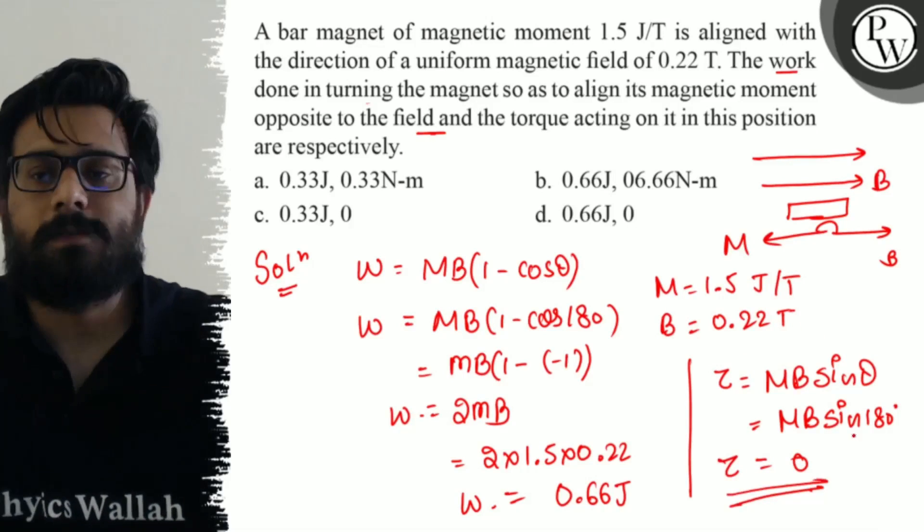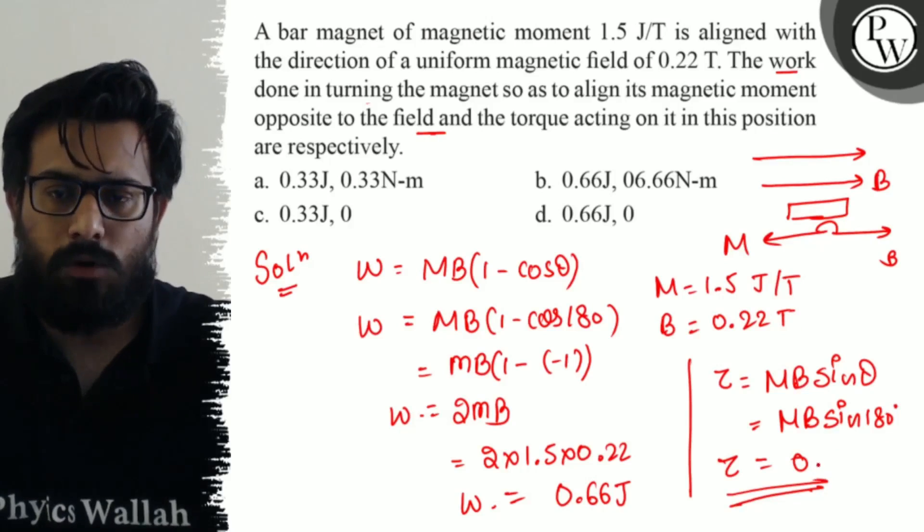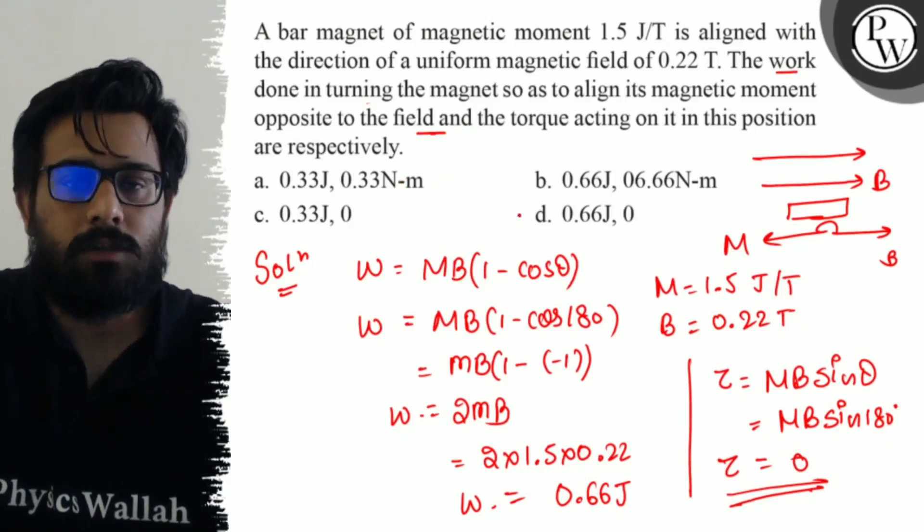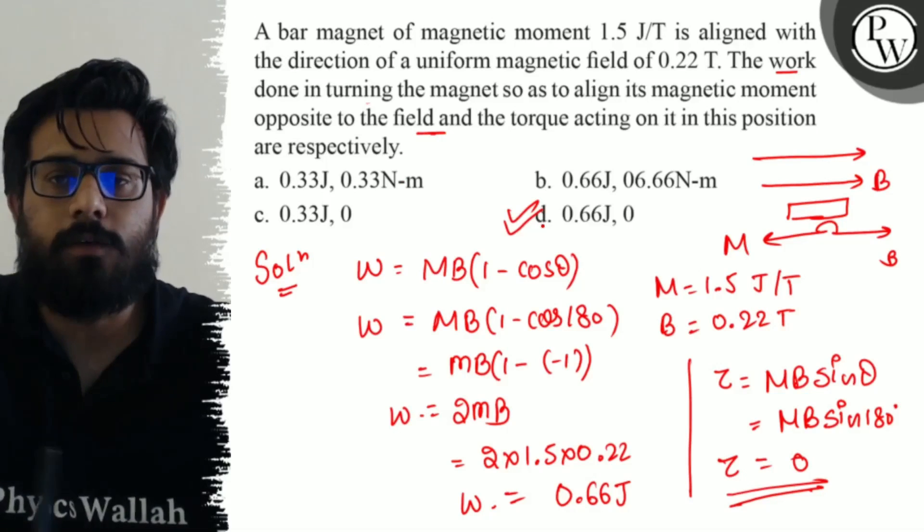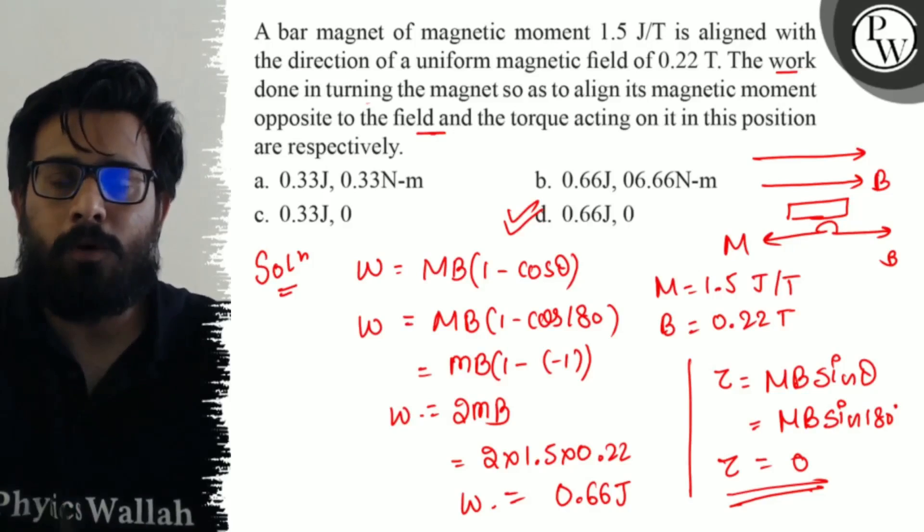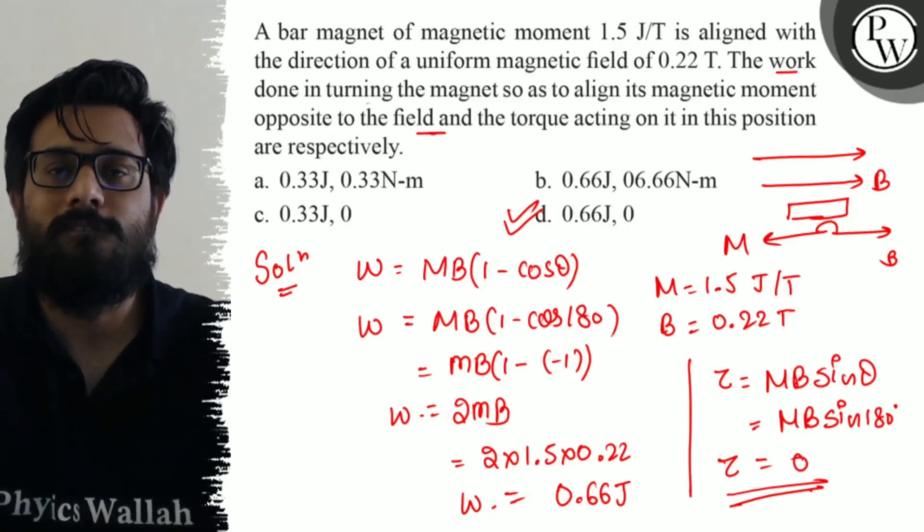Since the value of sine 180 is 0, and hence your torque comes out with 0 again. So the option is absolutely correct in which the work done is 0.66 Joule and the torque is 0. So I hope you get the concept of this question. All in the very best.